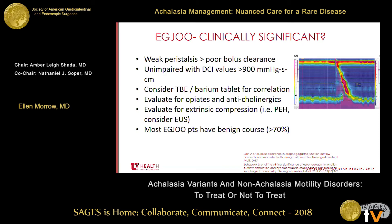Consider medications that could be affecting pressures at the LES — opiates and anticholinergics are some common examples. As surgeons, we need to remember to evaluate for pseudoachalasia or extrinsic compression. You can commonly see this finding on manometry when evaluating a patient who has paraesophageal hernia — don't be alarmed by that, that's probably the hernia. There was a study at Northwestern looking at EUS in these patients; the rate of findings is relatively low, but if you're concerned you can ask for an EUS to look for an intramural lesion. Just remember that most of these patients will actually have a benign course.